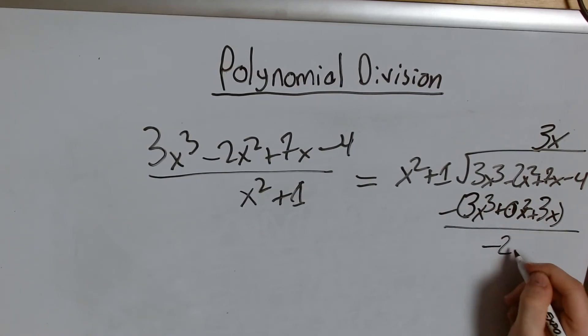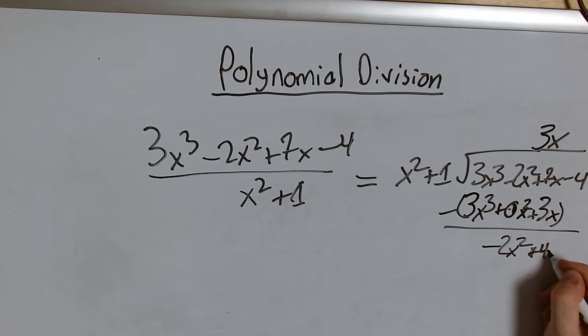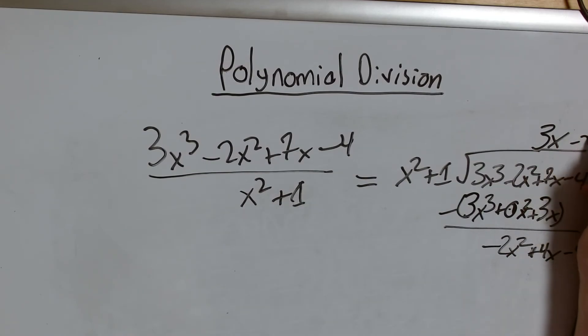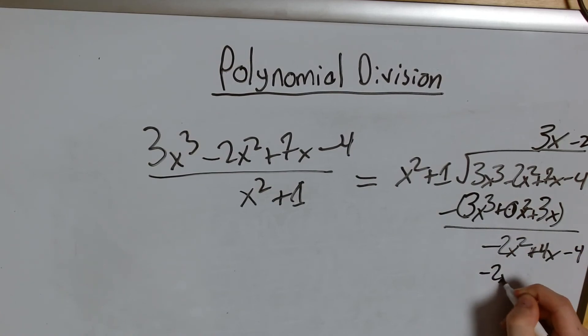I get negative 2x squared plus 4x minus 4. Now what do I do here? Well I want to get rid of this negative 2x squared so I'm going to need to multiply my x squared by negative 2 to get negative 2x squared.